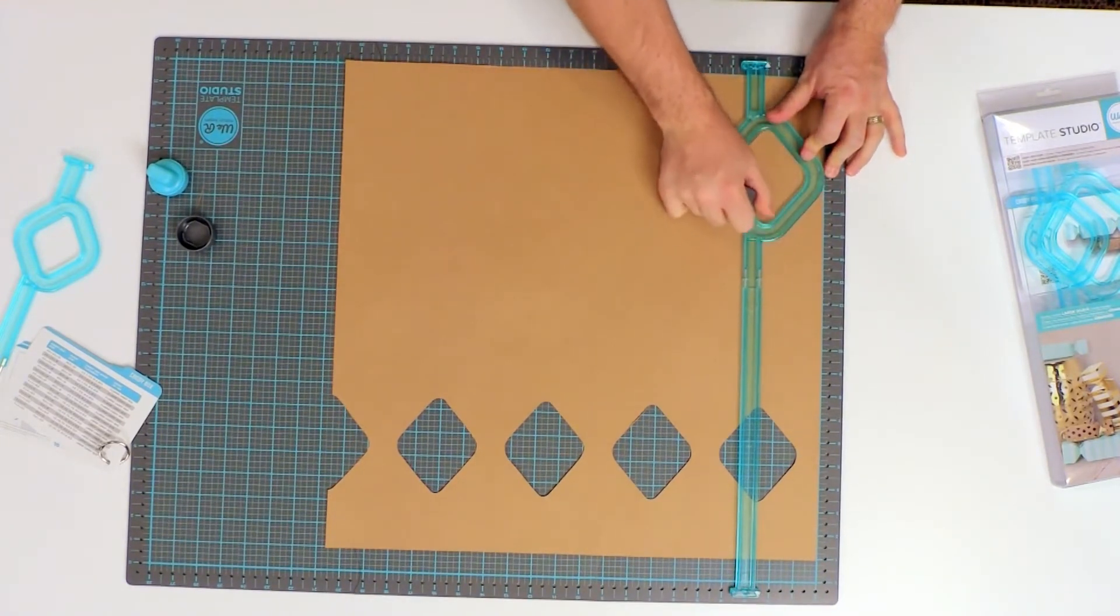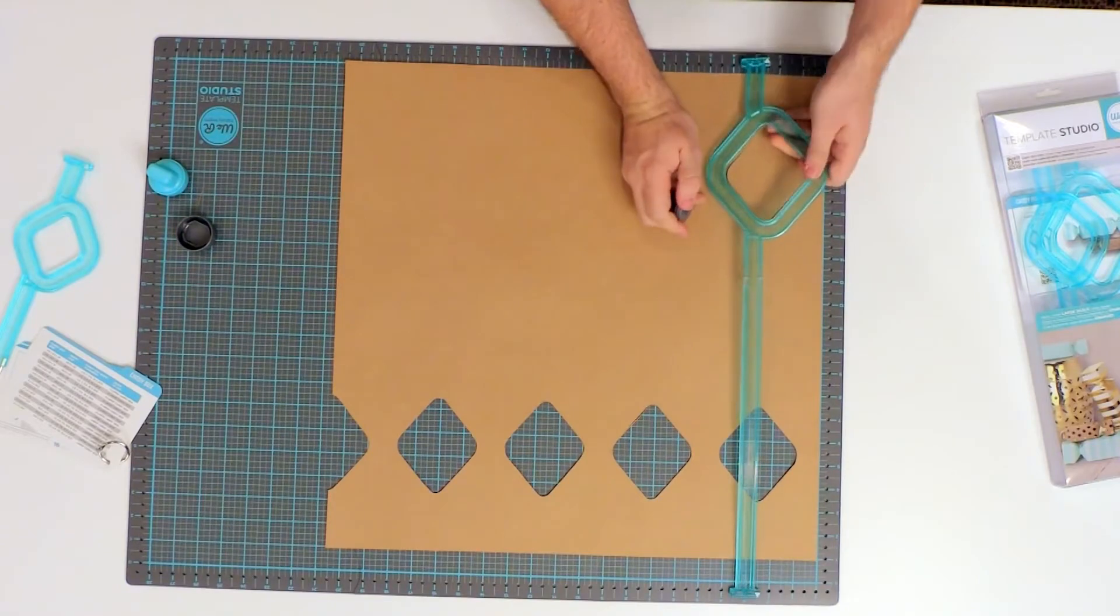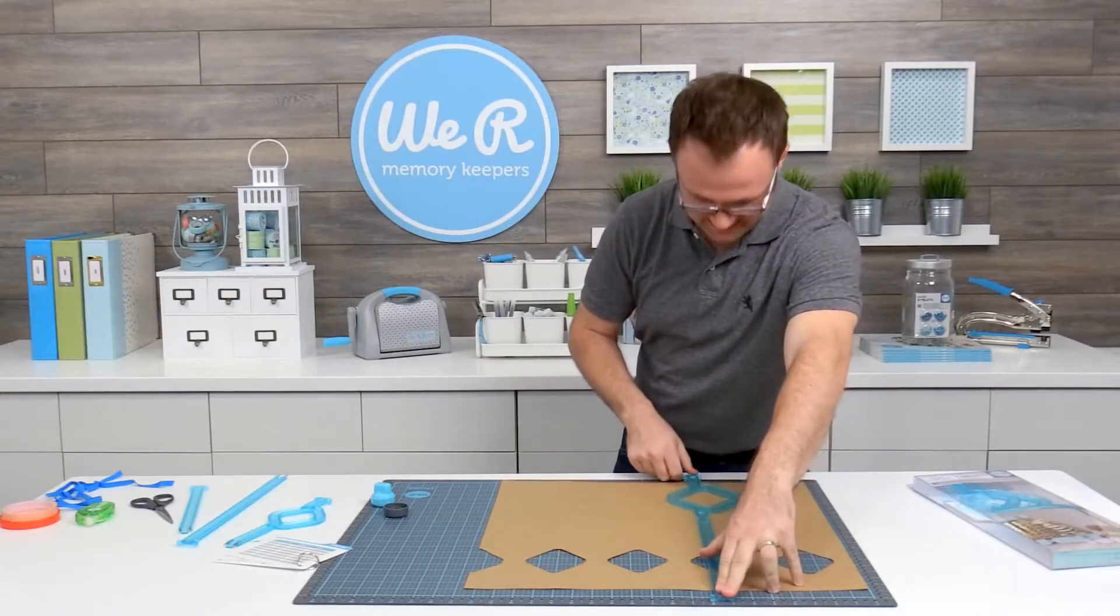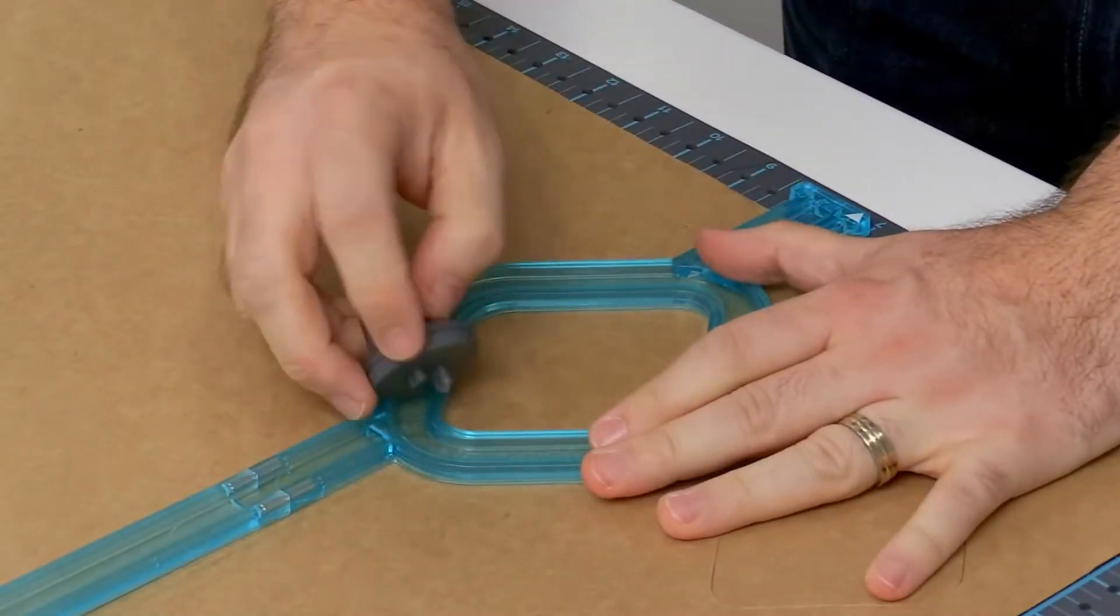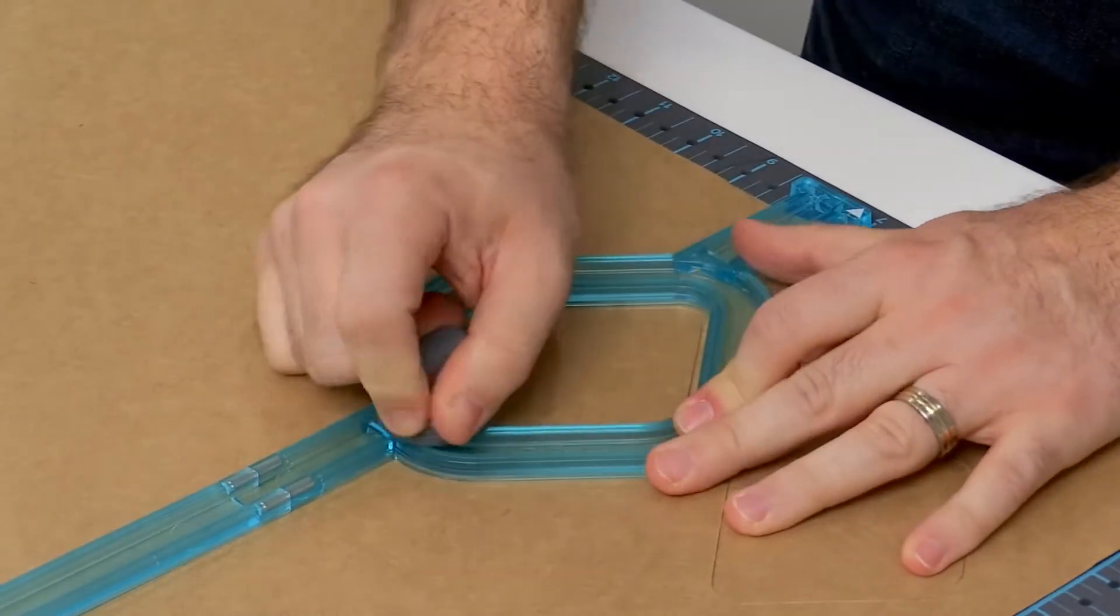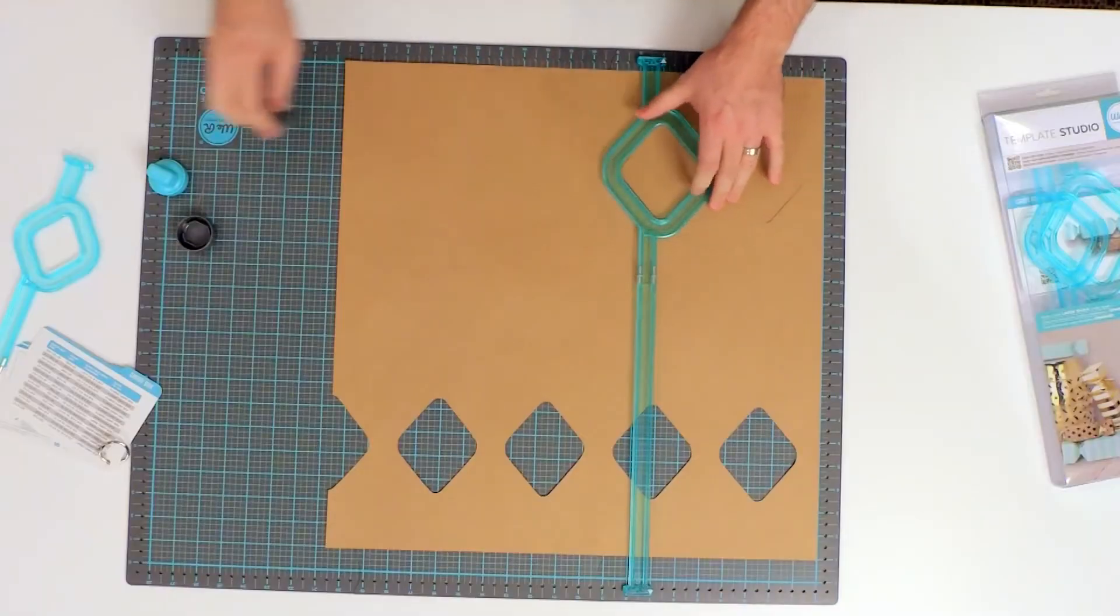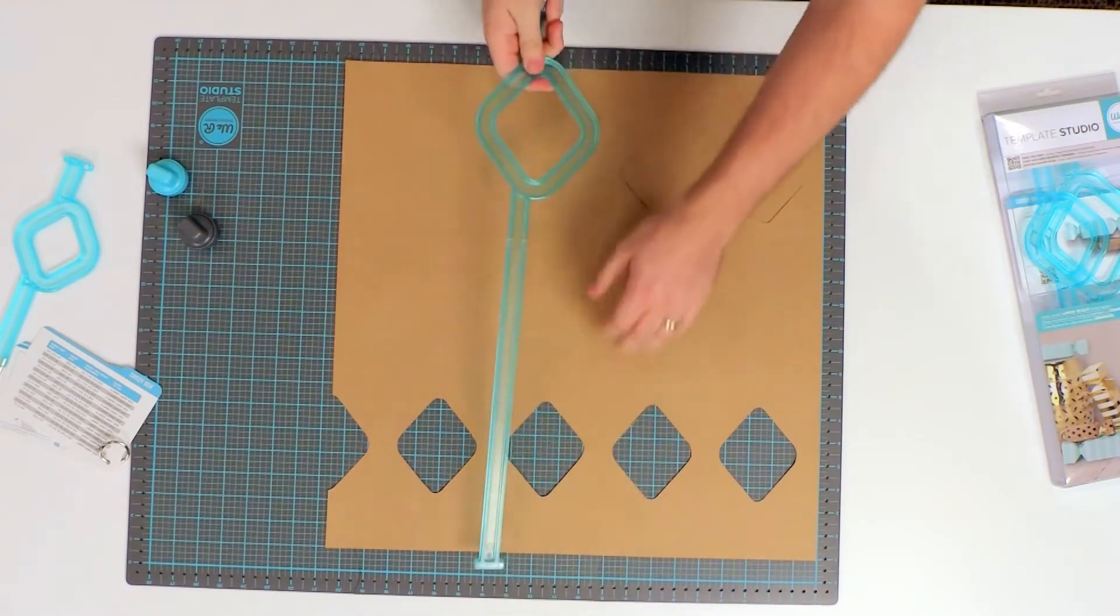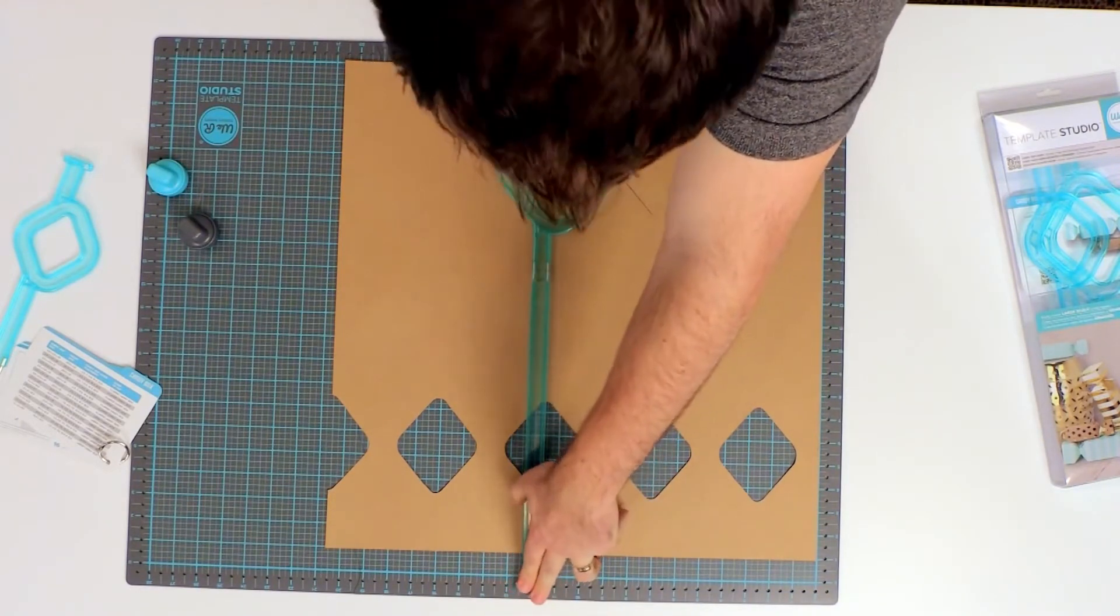Now all of the measurements in here that we have for the extra large are going to follow these exact same placements. They will all be at two and a half, seven, 11 and a half, 16 and 20 and a half. It's because they all use the same distance between each of the diamonds.